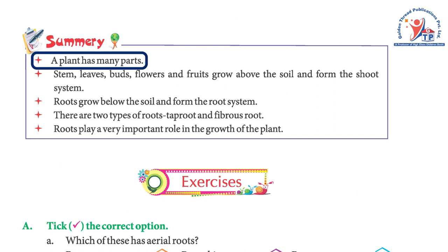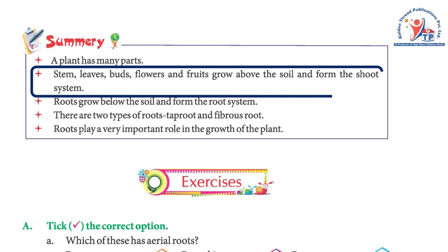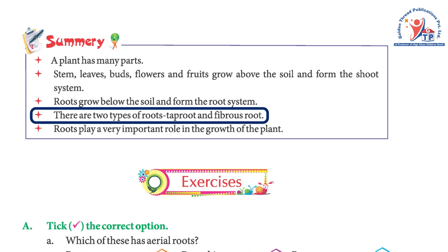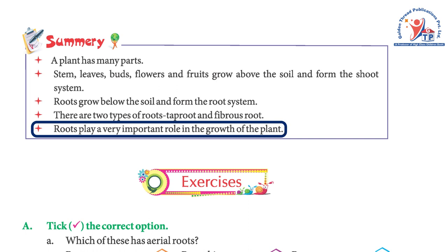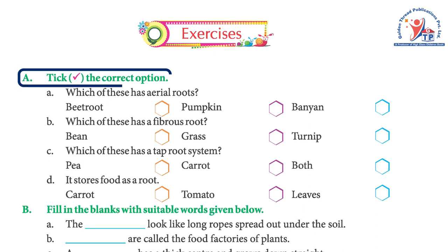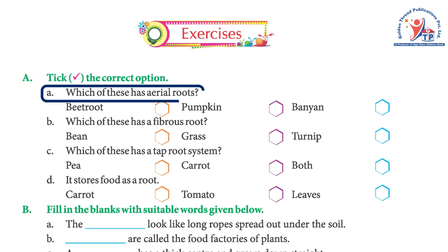Summary: A plant has many parts. Stem, leaves, flowers, and fruit grow above the soil and form the shoot system. Roots grow below the soil and form the root system. There are two types of roots: taproot and fibrous root. Roots play a very important role in the growth of the plant.